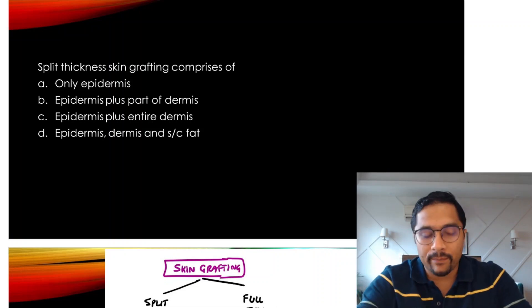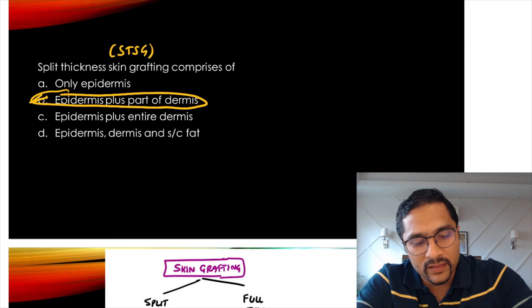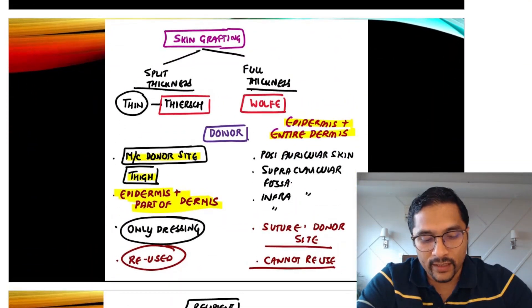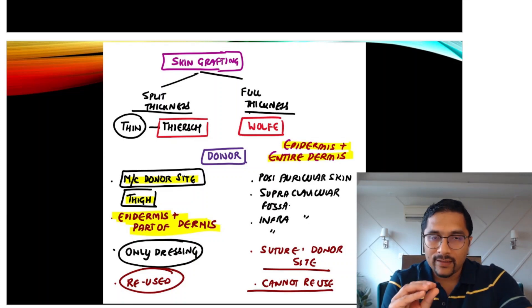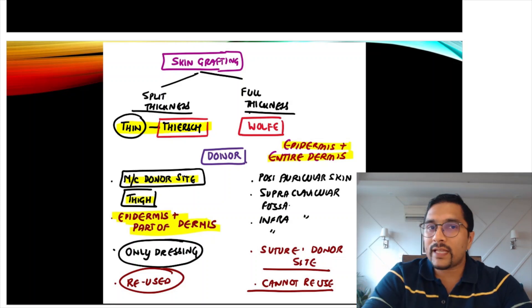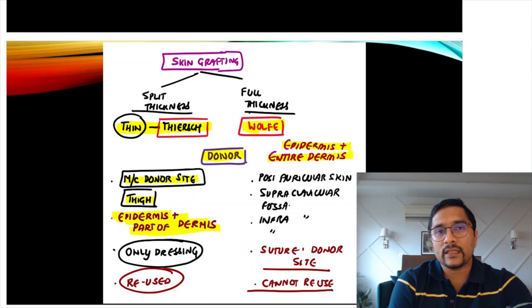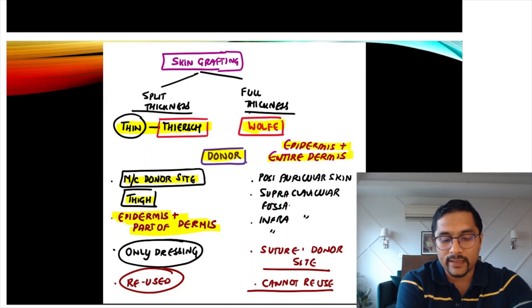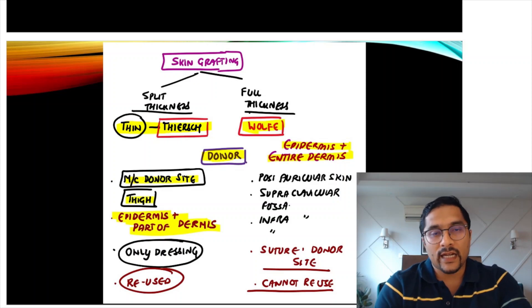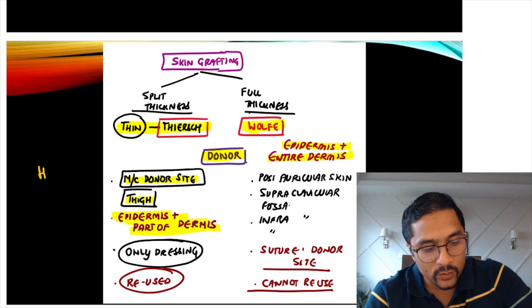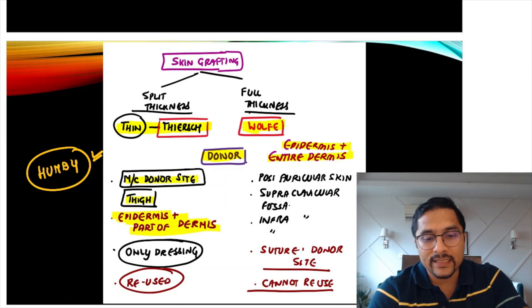A standard repeat question: split thickness skin graft has epidermis plus part of dermis (STSG). Skin grafts can be split thickness (thinner, also called Thiersch graft) or full thickness (thicker, also called Wolfe's graft). The most common donor site for STSG is the thigh. We use a Humby's knife to raise a split thickness skin graft — only dressing is required, and once healed, the donor area can be reused.